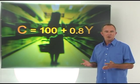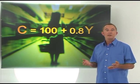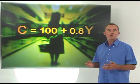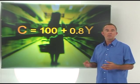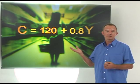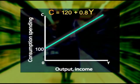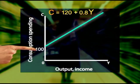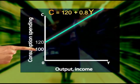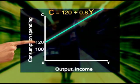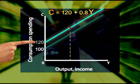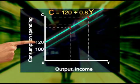If autonomous consumption changes from 100 to 120, autonomous consumption spending is higher, and so the vertical intercept will be higher. At every income level, total consumption spending is now higher than before. This is indicated by an upward shift of the consumption spending curve by a value of 20.